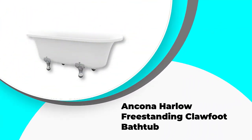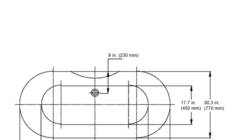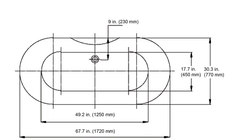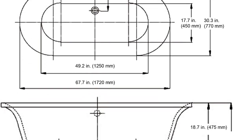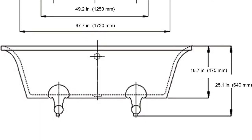Number five, Ancona Harlow Freestanding Clawfoot Bathtub. This modern luxury bathtub makes a nod to the bathtubs of times gone by with intricately decorated claw feet. The feet are made of solid brass and finished with chrome to match the overflow and pop-up drainage valve. However, keep in mind that the feet do not have adjustable leveling in case your bathroom floor is not perfectly level.